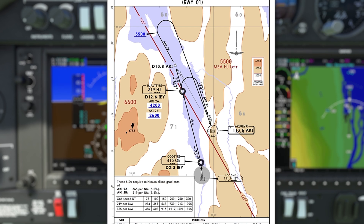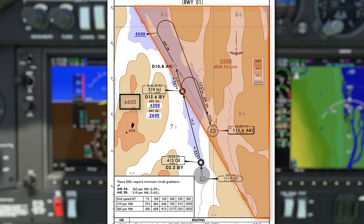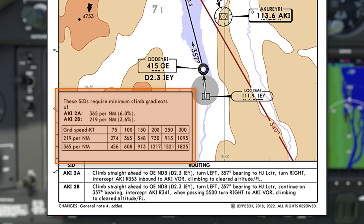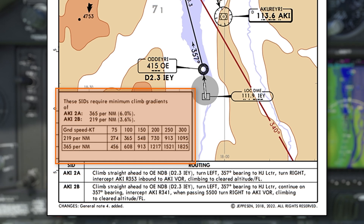Moving down onto the diagram, in the sector I'm taking off in and to the west as I depart, the minimum safe altitude is 6,600 feet. And to the east, the minimum safe altitude reduces to 5,500 feet. This SID requires a minimum climb gradient for the Alpha Kilo India 2 Bravo of 3.6%, which at a ground speed of approximately 100 knots gives a minimum rate of climb of 365 feet per minute. I'll round up and require a minimum climb rate of 400 feet per minute throughout the departure, which should be easily achievable.